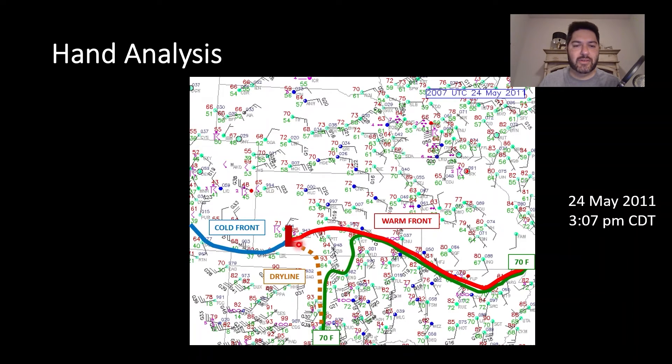This is known as the triple point. That's where the cold front, the warm front, and the dry line come together. So three things, the triple point. And that's where a lot of storm chasers will actually focus on their targets right here just to the northeast of the sort of bowing out dry line, the bulging dry line.